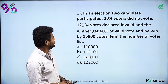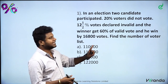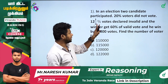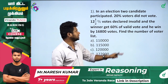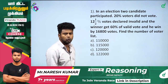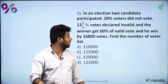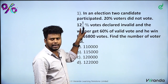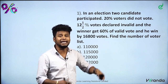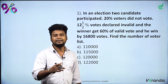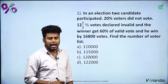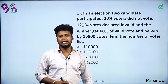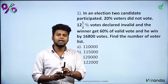So straight away, what is the first question? In an election, two candidates participated. 20% of voters did not vote. 12.5% of votes were declared invalid. The winner gets 60% of valid votes and won by 16,800 votes.